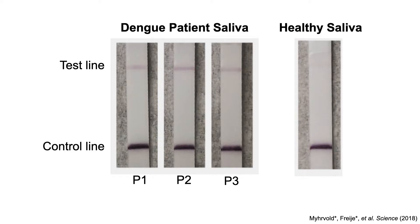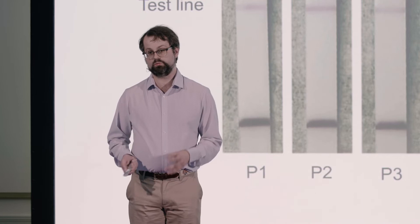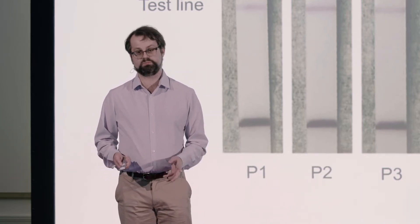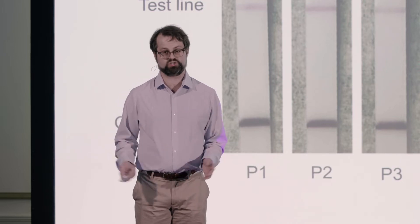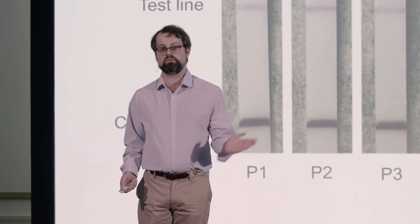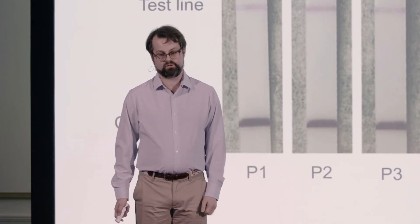You can see bands showing up in saliva taken from dengue patients — I'm showing you three patients, as well as one healthy saliva control where you don't see a band. That is simplifying our ability to detect viruses. It would be very hard to do PCR in this circumstance because that requires laboratory infrastructure and lots of other things.